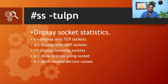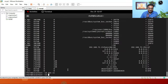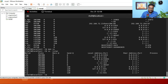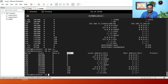The ss command with flags -tulpn provides detailed socket statistics: -t displays only TCP sockets, -u displays only UDP sockets, -l displays listening sockets, -p shows the process using the socket, and -n means don't resolve service names. Running ss -tulpn shows net ID, state, local address and port, peer address and port, and the process.